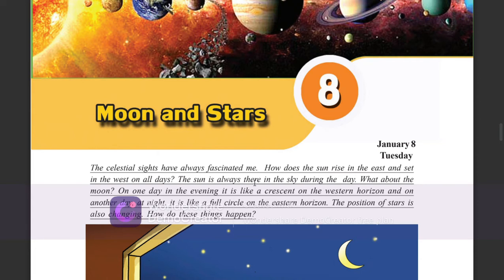How does the sun rise in the east and set in the west on all days? The sun is always there in the sky during the day. What about the moon? On one day in the evening it is like a crescent on the western horizon, and on another day at night it is like a full circle on the eastern horizon. The position of stars is also changing. How do these things happen?